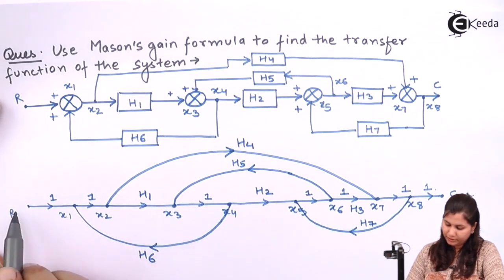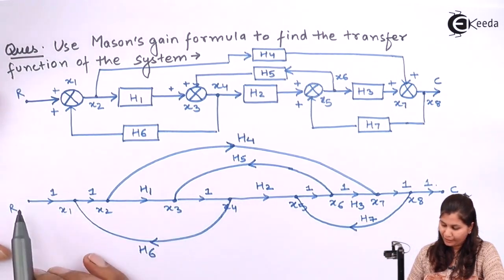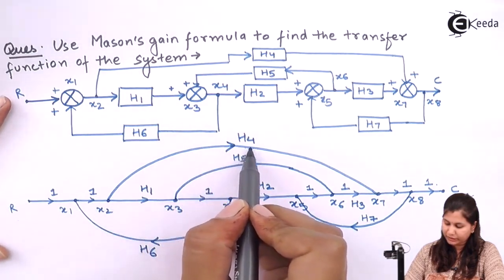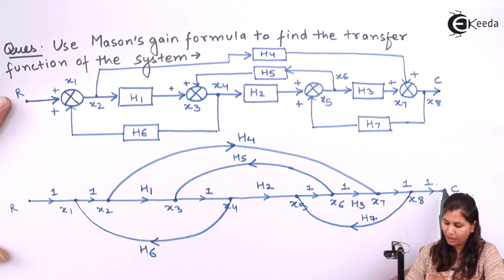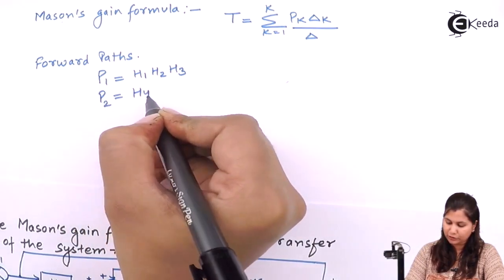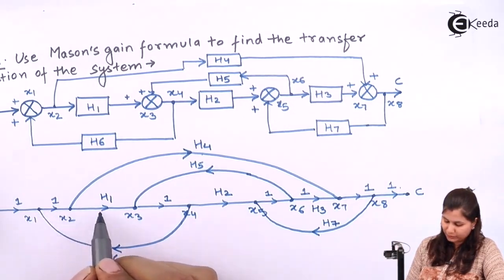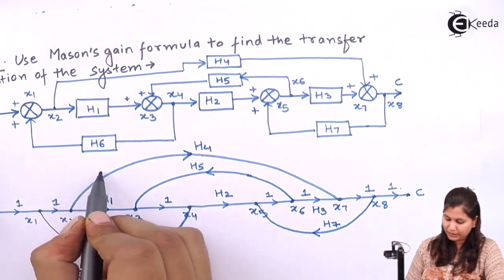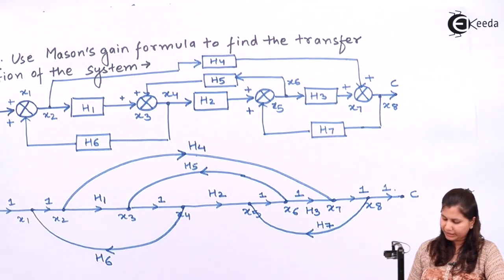The second forward path goes through X1, X2, X7, X8, and C, having the gain H4. So P2 equals H4. These are the 2 forward paths; we have not obtained any other forward path.